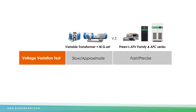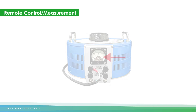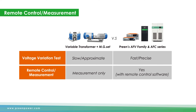Frequency adjustment is also a valuable advantage of the programmable power source, while the variable transformer has less convenient operation. For the second application, we compare remote control and measurement. Users can read parameters through the pointer of a variable transformer, while programmable power sources show the numbers directly. With multiple communication interfaces and the Preen program, users are able to operate sophisticated sequences via programmable AC source remotely, which cannot be done with a variable transformer.